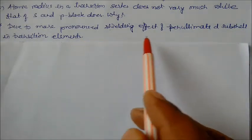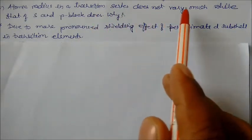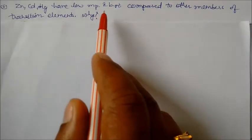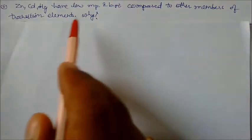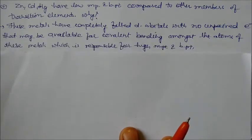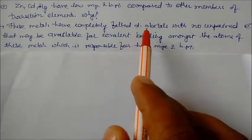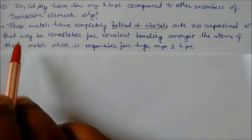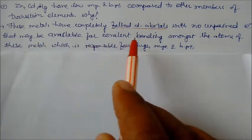Zinc, cadmium, mercury have a low melting point and boiling point compared to other members of the transition elements. Why? Actually these elements have completely filled d orbitals, with no unpaired electrons, and they may be available for covalent bonding among the atoms of these elements.